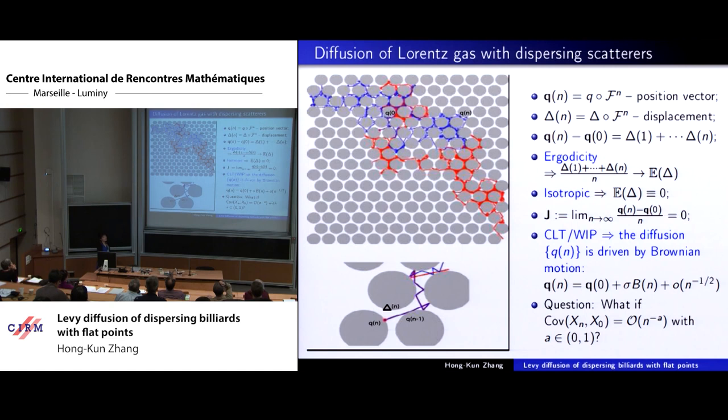There are already many results, and from this talk and references there are many results about convergence to stable law and convergence to Lévy process. For example, in expanding maps there is a very famous model constructed by Lévy, which has arbitrarily slow decay correlation. The stable law result was proven in a beautiful result by Dunker and also Giselle, who proved convergence to stable law and also Lévy process.